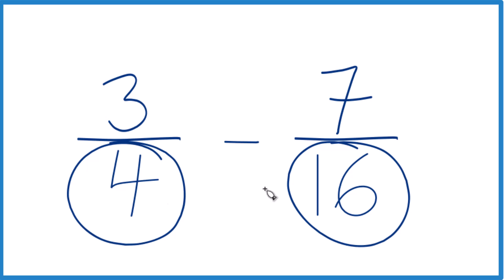Right now we have 4 and 16. But if we had a common denominator, then we just deal with the numerator, bring the denominator across, and we'd be done.